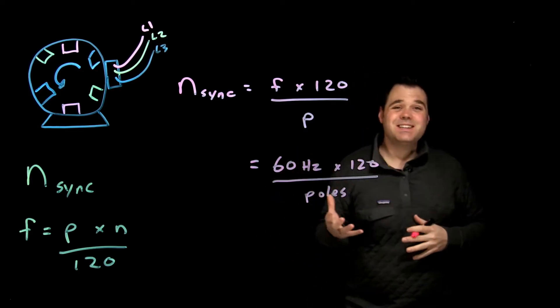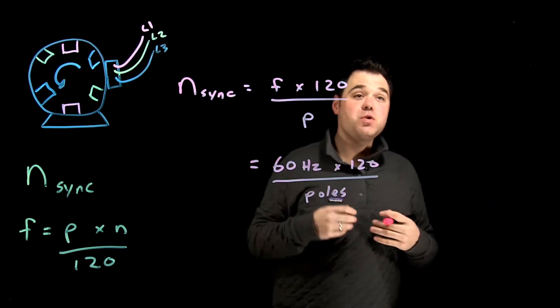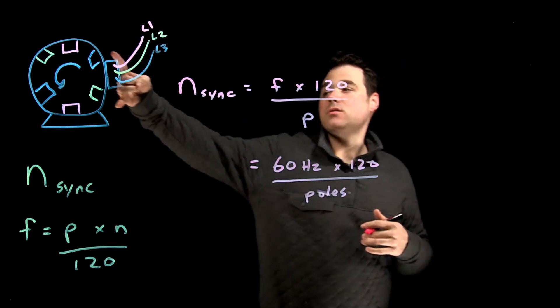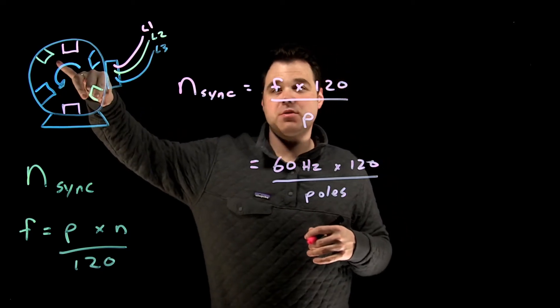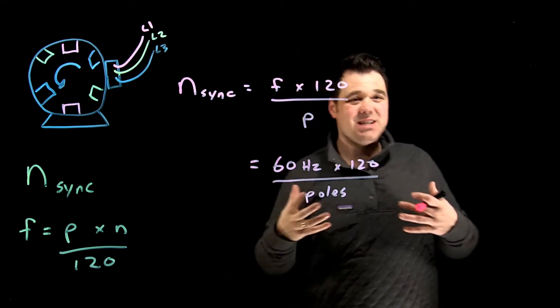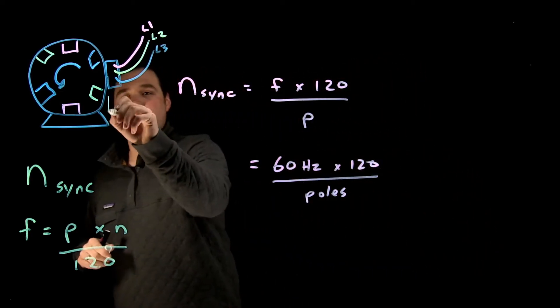Now this is the number of individual poles. So in this motor here, I'm a two pole motor, so I have two poles per phase—two poles for the A phase, two poles for the B phase, and two poles for the C phase. And that of course is most likely going to be stamped right on the nameplate.